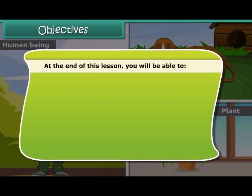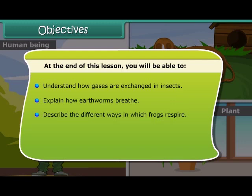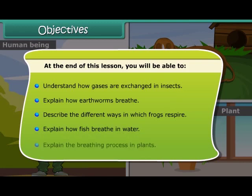Objectives: At the end of this lesson, you will be able to understand how gases are exchanged in insects, explain how earthworms breathe, describe the different ways in which frogs respire, explain how fish breathe in water, and explain the breathing process in plants.